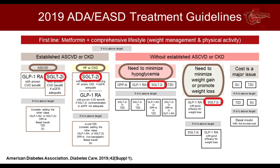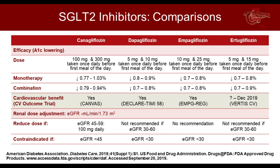Looking at the current guidelines, metformin is first-line — though that won't be the case for long. SGLT2 inhibitors are beneficial across the board because they help with ASCVD, reduce heart failure, address chronic kidney disease, provide weight loss benefits, and carry low hypoglycemic risk — making them an optimal agent in virtually every category. You can compare the agents by dose, A1C-lowering ability, cardiovascular trial data, and current renal dosing recommendations, though things may change as the CREDENCE trial results are published.